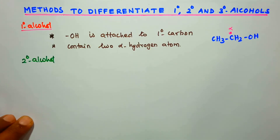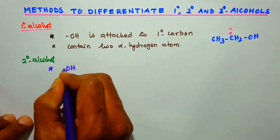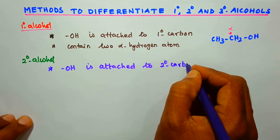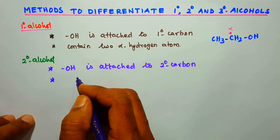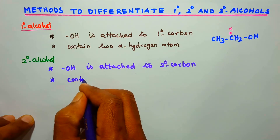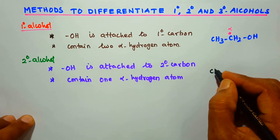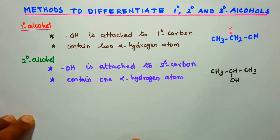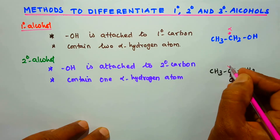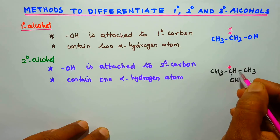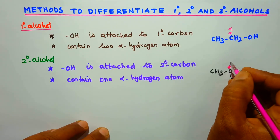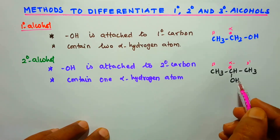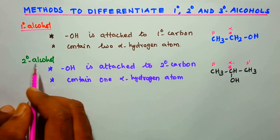Next is secondary alcohol. Secondary alcohol is attached to a secondary carbon. The carbon bearing the functional group contains one alpha hydrogen atom. For example, CH3-CH(OH)-CH3: the OH group is attached to a carbon that has one alpha hydrogen atom, so that alcohol is called a secondary alcohol.